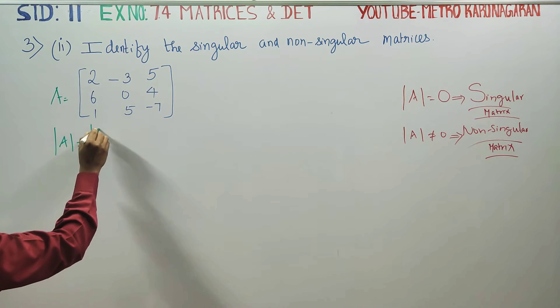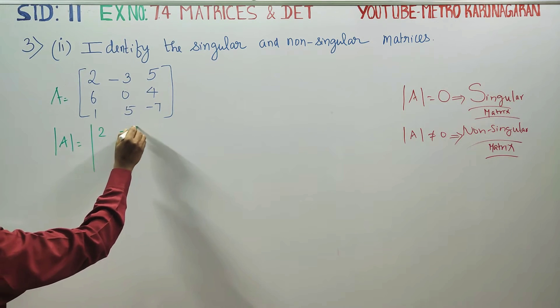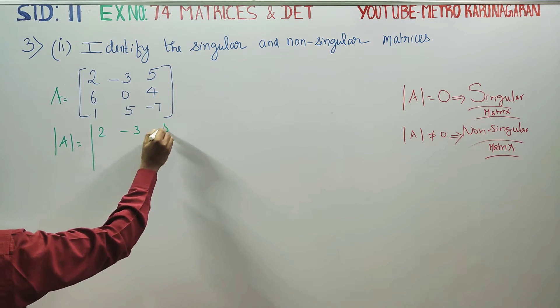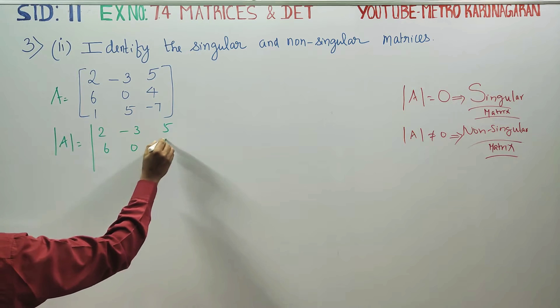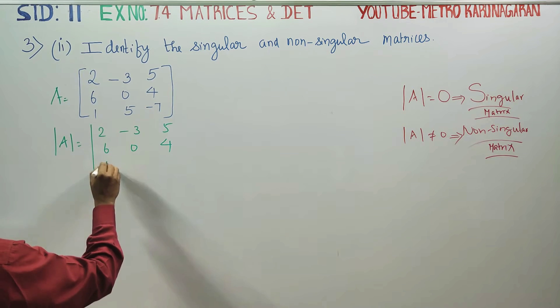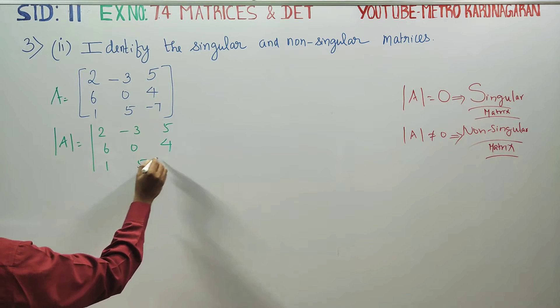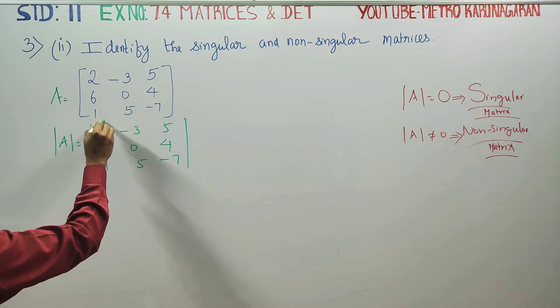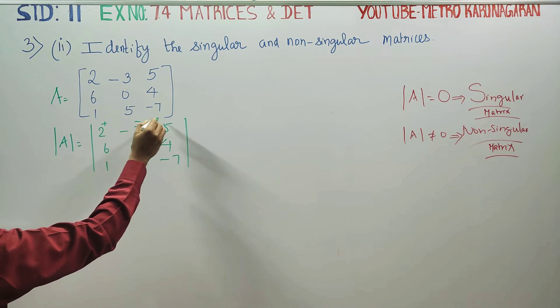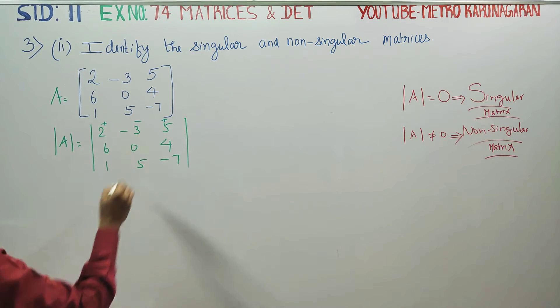The matrix entries are: 2, -3, 5 in the first row; 6, 0, 4 in the second row; 1, 5, -7 in the third row. You have to break this determinant.